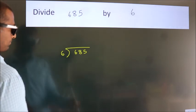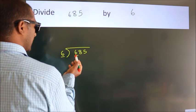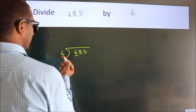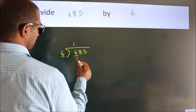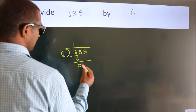Next, here we have 6, here 6. When do we get 6? In 6 table, 6 once 6. Now we should subtract. We get 0.